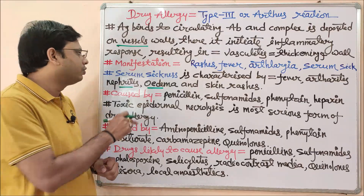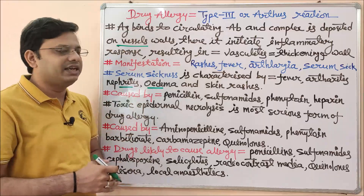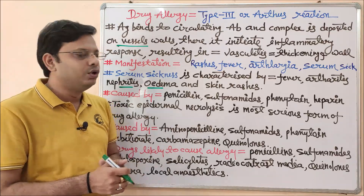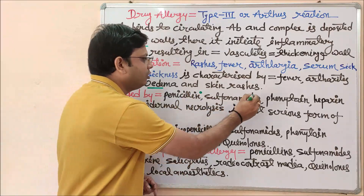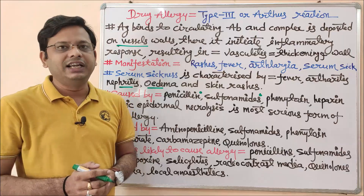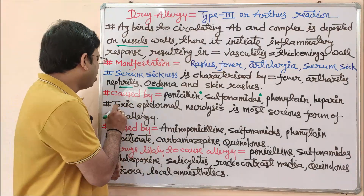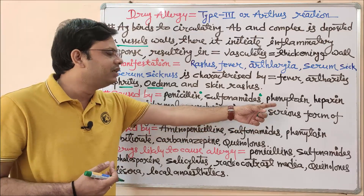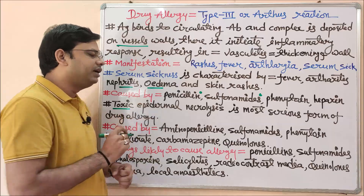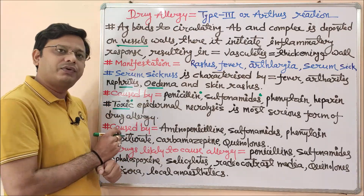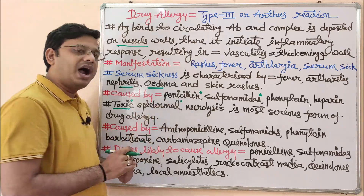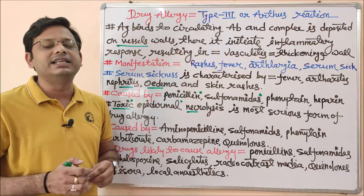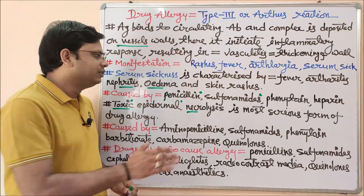The basic drugs responsible for causing serum sickness or Type 3 Arthur's reaction include penicillin, sulfonamides, phenytoin used as an anticonvulsive drug, and heparin used as an anticoagulant drug. Apart from these, toxic epidermal necrosis is the most important expression of a severe form of drug allergy. 'Epidermal' means it takes place in the epidermis, and 'necrolysis' means cell death — not programmed, but unwanted cell death.